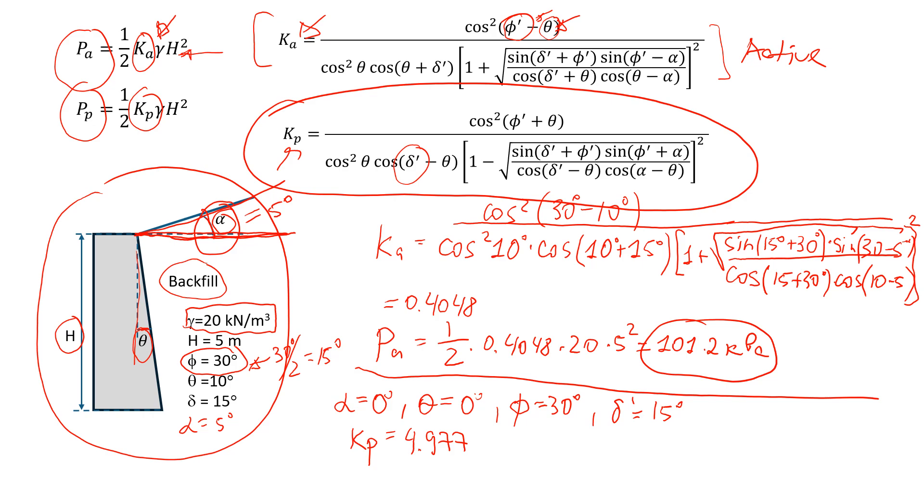So that will be the coefficient. And then let's estimate the passive pressure acting on the wall. It will be half of this coefficient, 4.977 times the unit weight, which is still the same soil, 20, and the height is still the same, 5 meters in the power of 2. That will give us a value of 1,244.3 kPa.